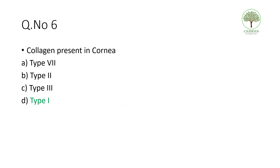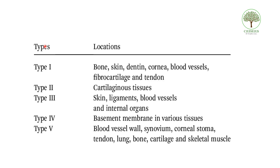Sixth question: which collagen is present in the cornea? Majorly it is type 1. Some students may think it could be type 4. Looking at the tabular column: type 1 collagen is present in bone, skin, dentin, cornea, and gingiva. Very important to remember — bone, dentin, cornea, and gingiva.